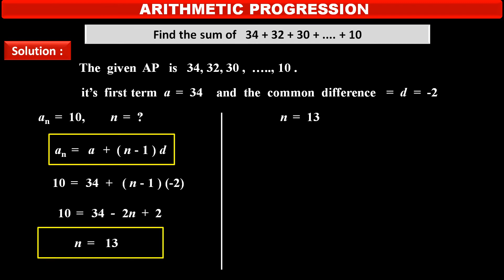Now, we have n is equal to 13, means total number of terms is 13. And we have to find out sum of all terms, that is S_n, means in this case we have to find S_13, sum of 13 terms. We know the formula S_n is equal to n upon 2 into in bracket 2a plus in bracket n minus 1 into common difference d.